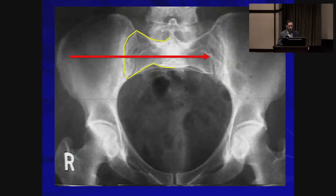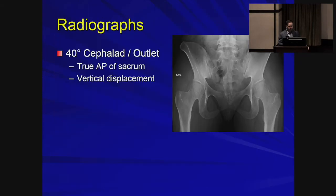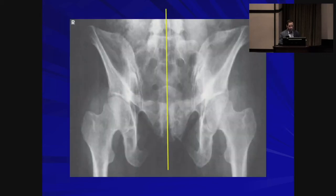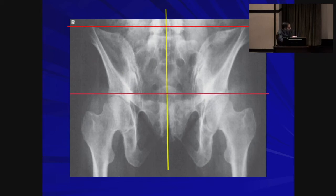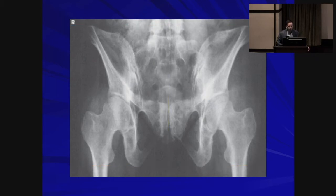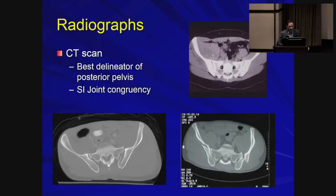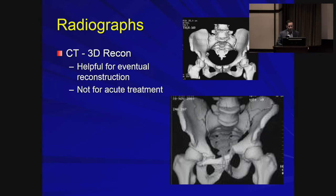Intraoperatively, the inlet view is used to get a nice axial cross-section of the S1 body when placing posterior sacroiliac screws. The outlet view shows the sacral foramina you want to avoid when placing SI screws, and also reveals vertical migration — if the iliac wing is above the reference line, the hemipelvis is vertically migrated. CT scans give excellent information about the posterior pelvis not visible on x-ray; 3D reconstructions are very helpful for preoperative planning of definitive ORIF.